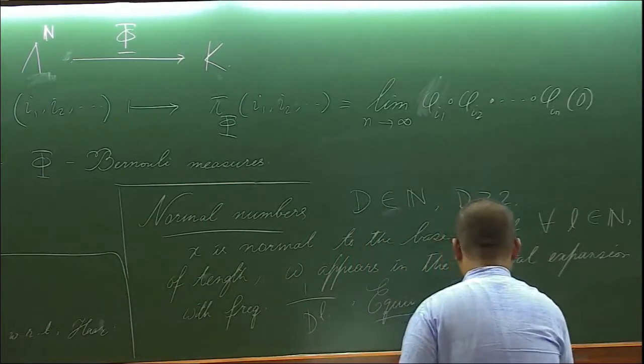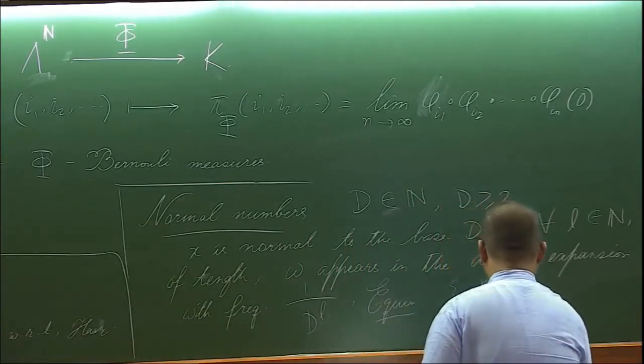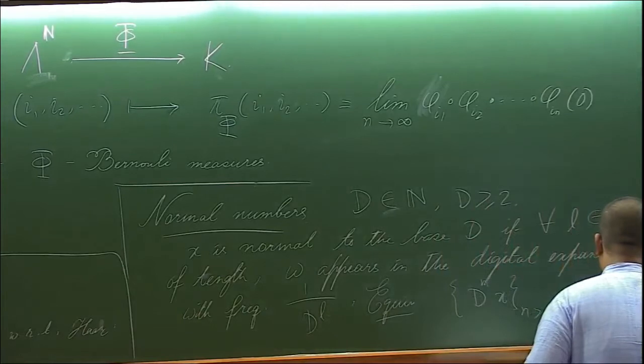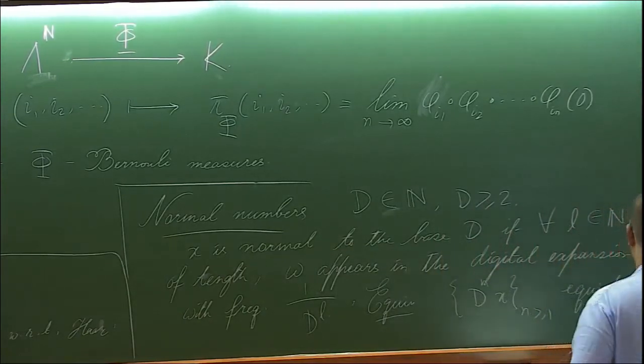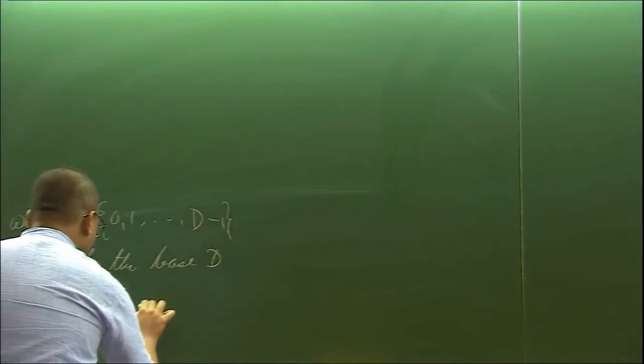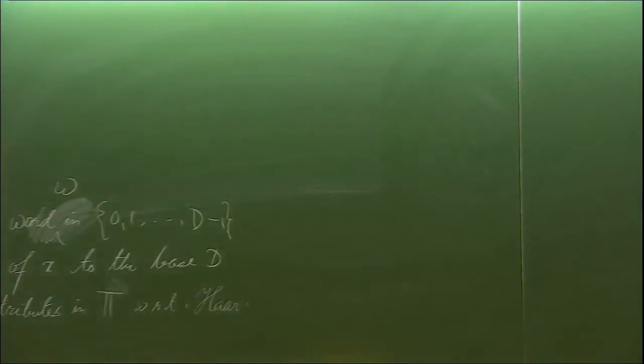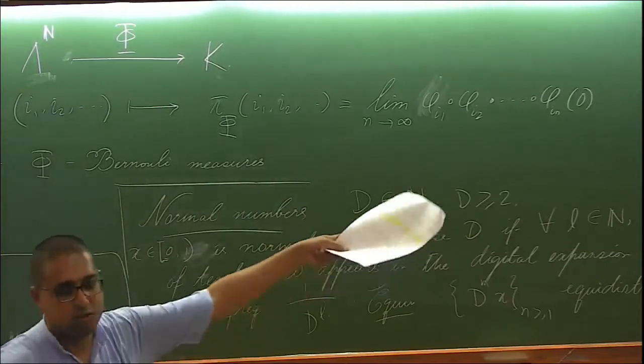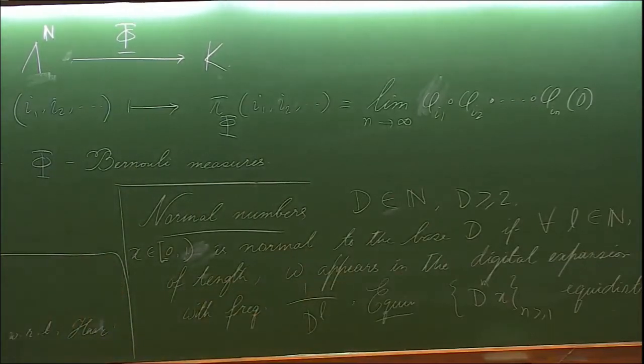equidistributes in the one-dimensional torus with respect to Haar measure. We can remove the fractional part, it's no problem. So this is what the definition of normal number is. If a number is normal with respect to any base, then we will call it normal.